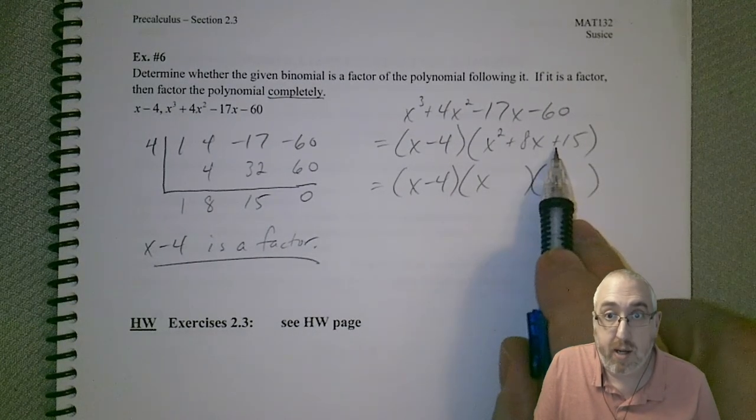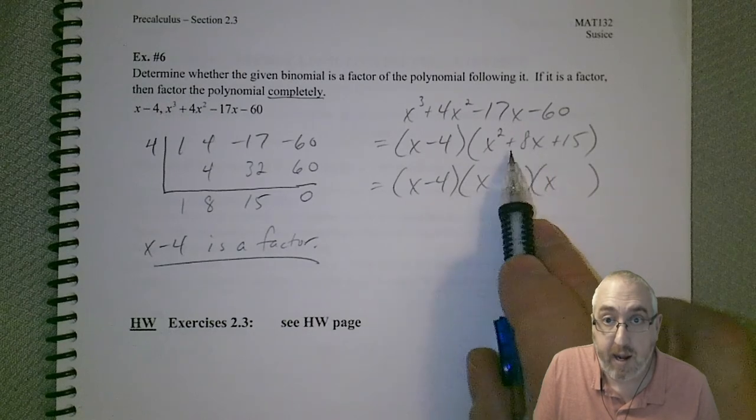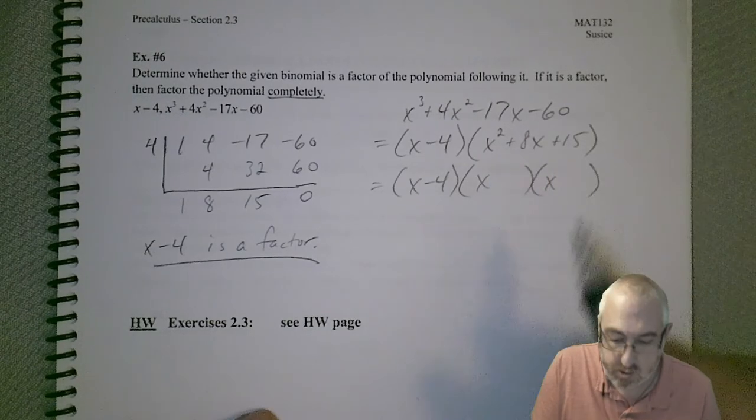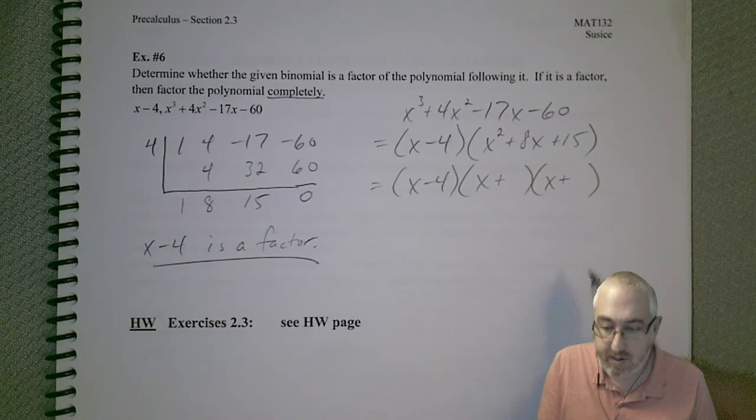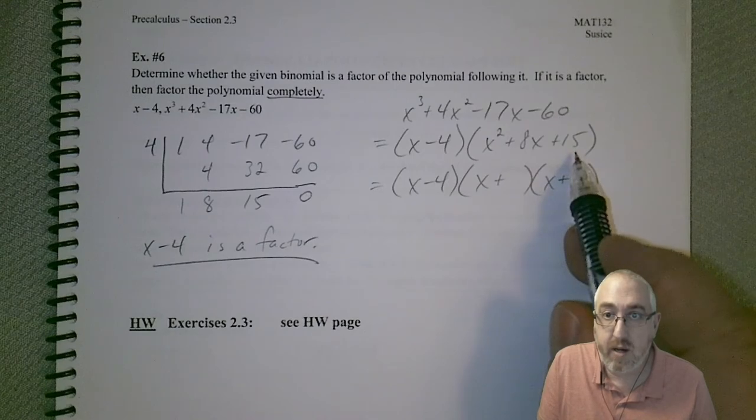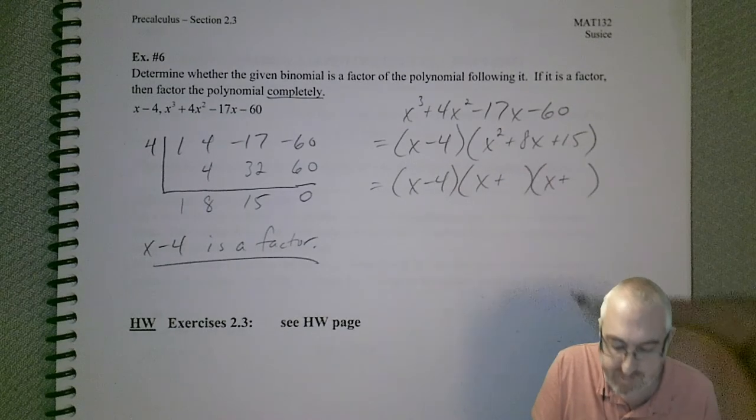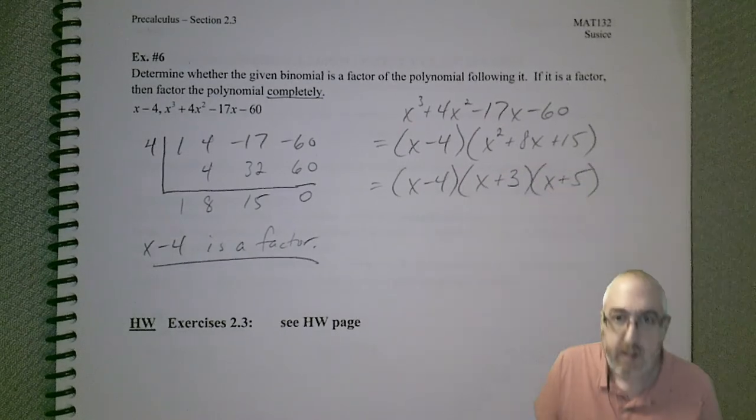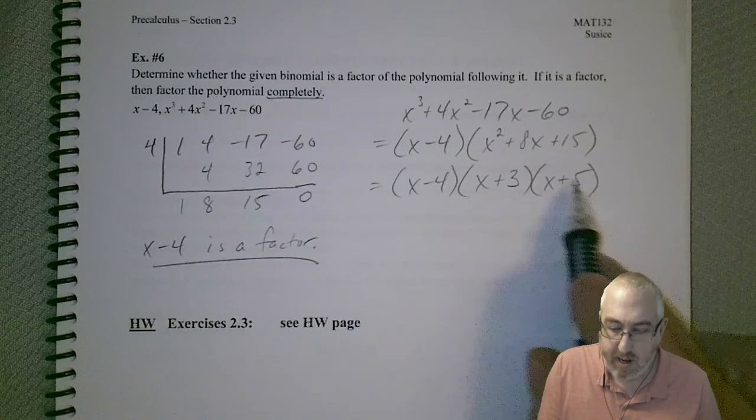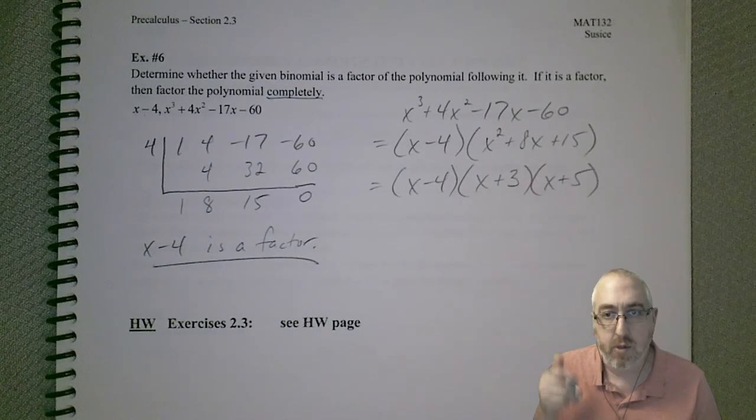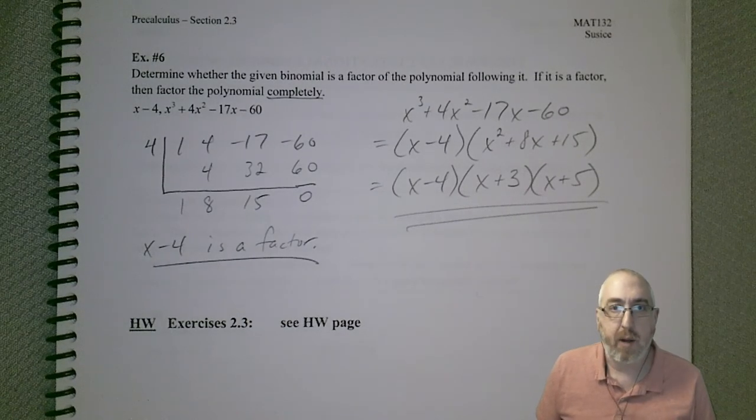So, let's see. We got to go x and x. Now, the last sign is plus. So, that means they're the same. And, the sign in the middle is plus. So, that means they're both pluses. Okay. So, we need two factors of 15 that add to 8. Hmm. I think you probably already know. It's got to be 3 and 5, right? Those ones add to 8, and they multiply to 15. So, we're good. So, that should be the fully factored polynomial.